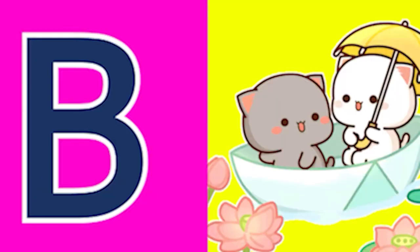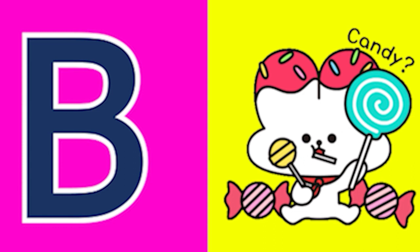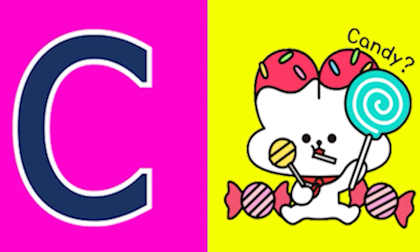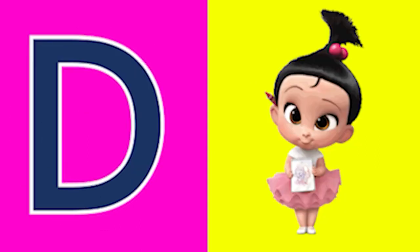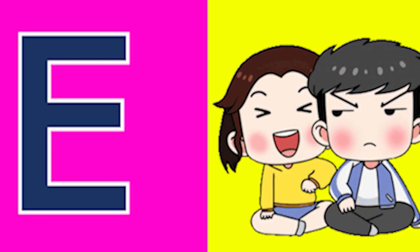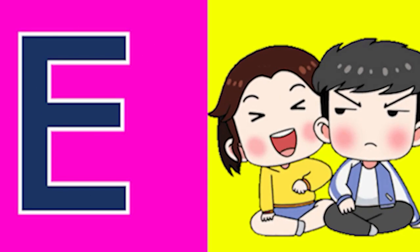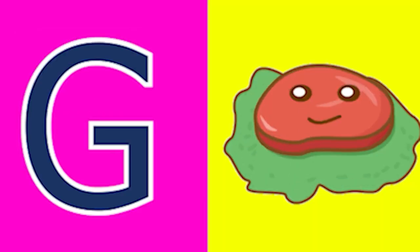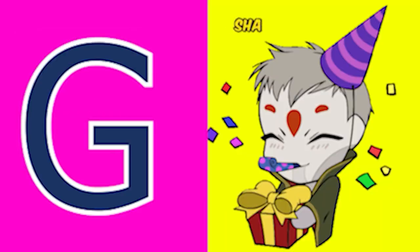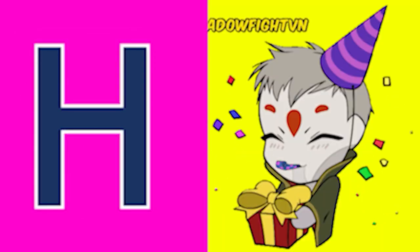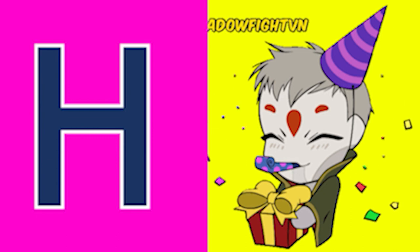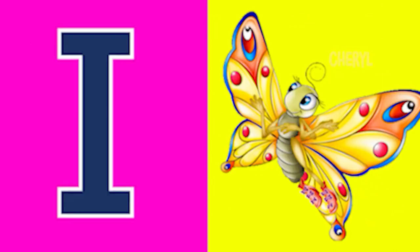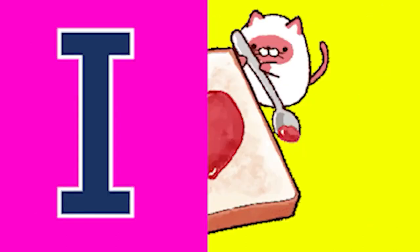A for arrow queen, B for boat, C for candy, D for doll, E for elbow, F for foot, G for glass and H for horn. I for insect.